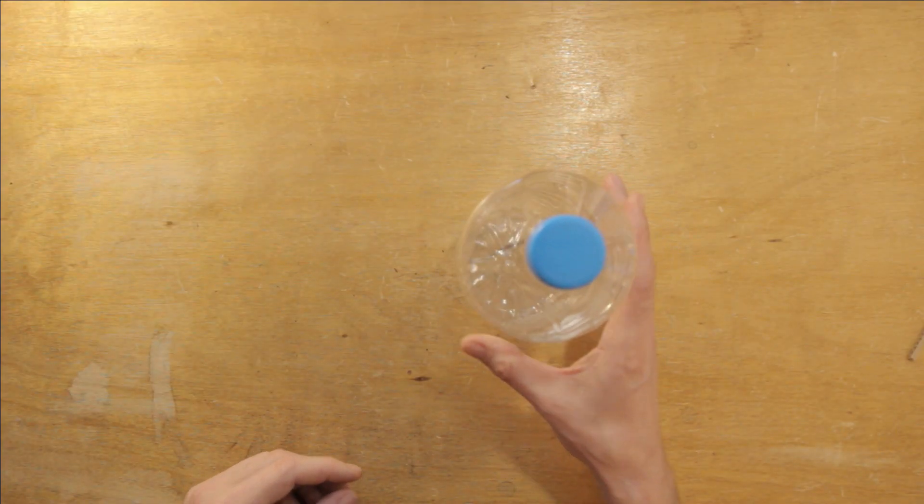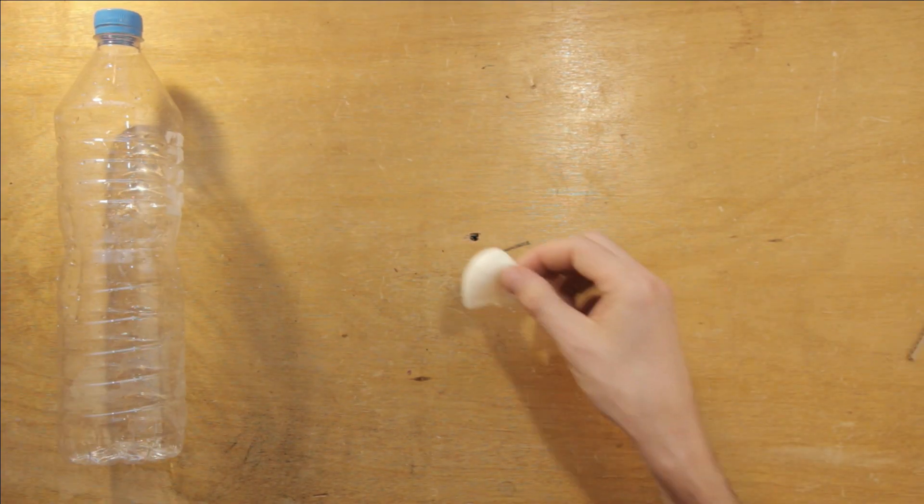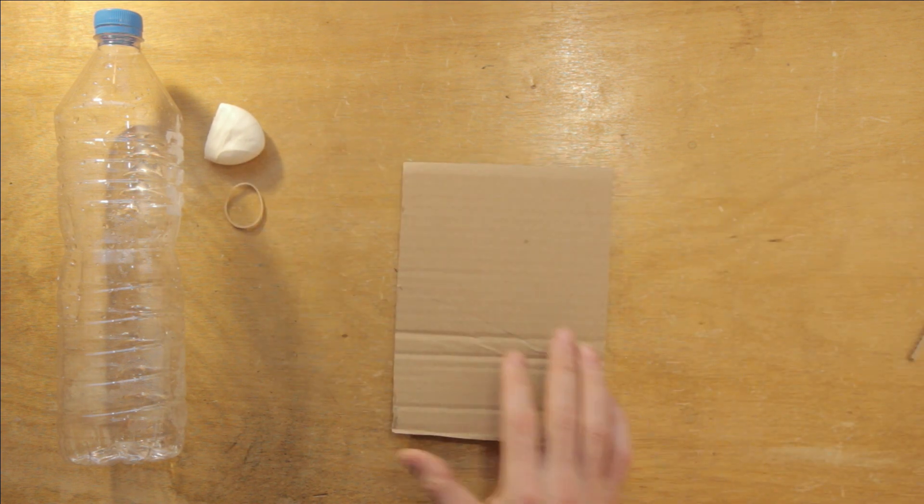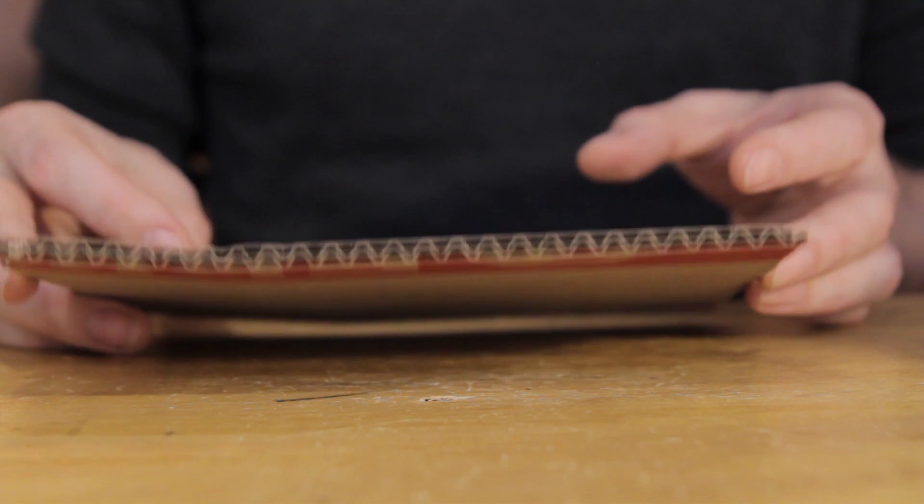We'll need some basic materials. Let's get a plastic water bottle, a white balloon, a rubber band, and a bit of cardboard. Finally, we'll need the sensor component itself.